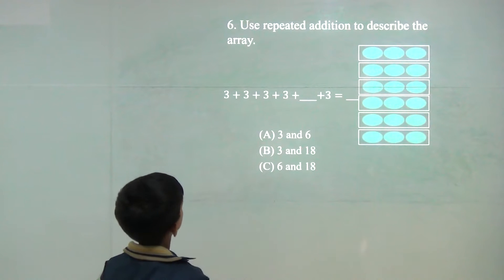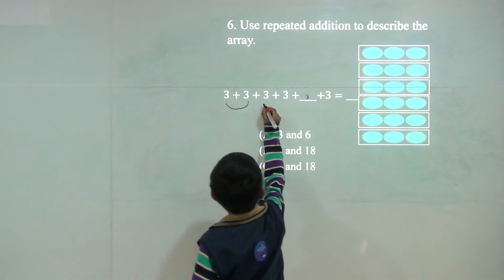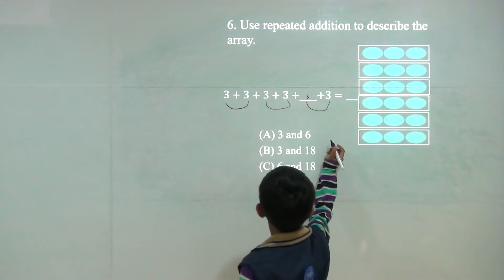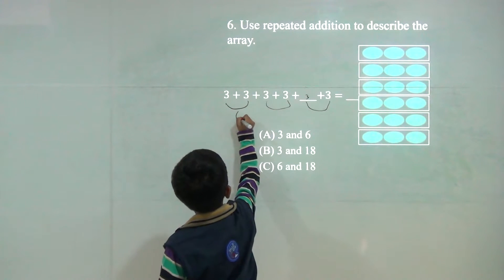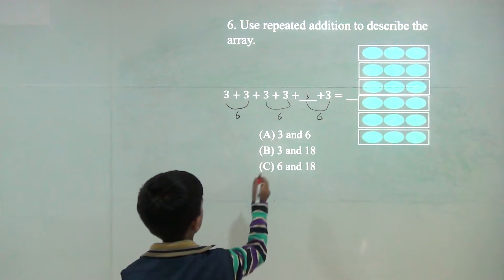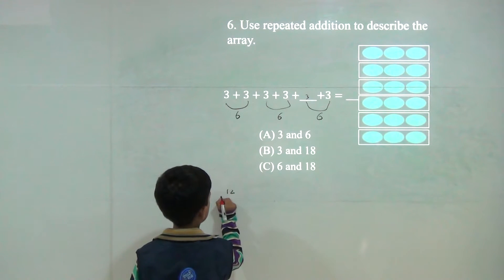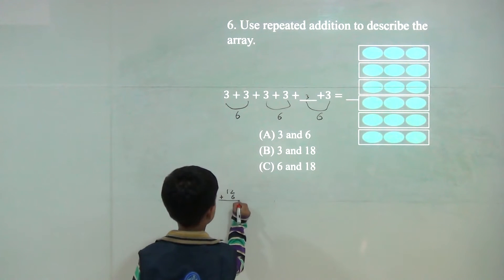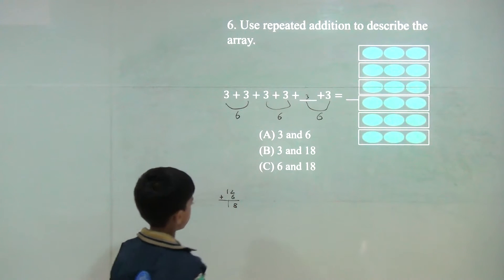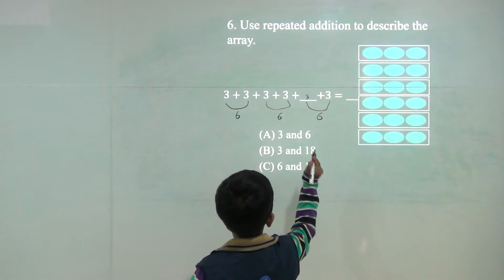Now 3 and so 3, 3 and 3, 3. So it will be 6, 6, 6, 6. Now 6 plus 6 would be 12 plus 6 would be 18. So answer would be 18. So 3 and 18.